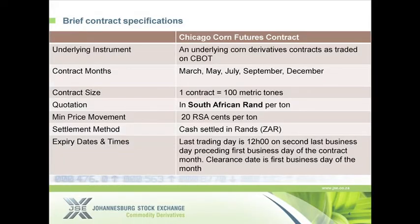Now you've got a one-stop, one-screenshot ability to trade both the Chicago corn and the South African white or yellow maize contract. Looking at a summary of the contract specs, there's no rocket science in the design — we simply try to mirror the international reference market as closely as possible.